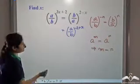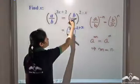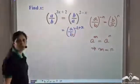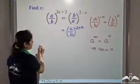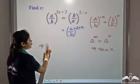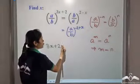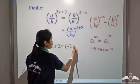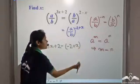Here we can say that 3x plus 2 is equal to negative 2 plus x.